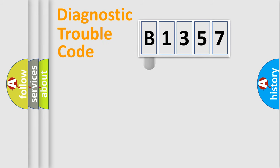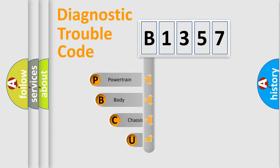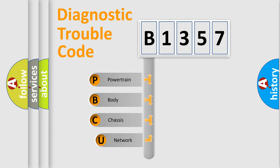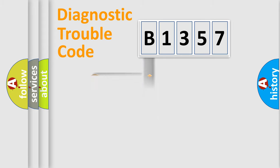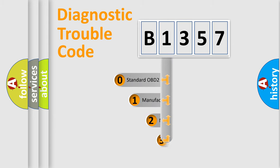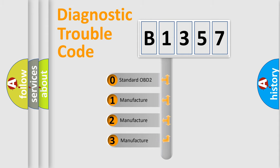Let's look at the history of diagnostic fault code composition according to the OBD2 protocol, which is unified for all automakers since 2000. We divide the electric system of an automobile into four basic units: Powertrain, Body, Chassis, and Network. This distribution is defined in the first character of the code.